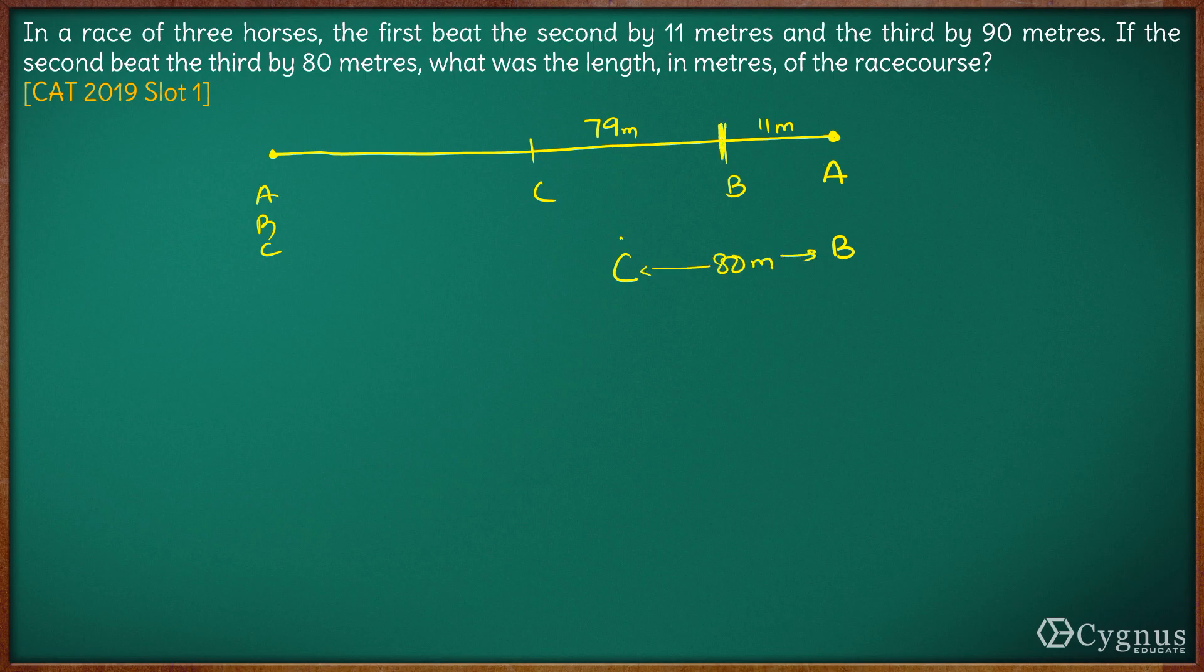When B was at this point, C was 79 meters behind, but by the time B travels another 11 meters, C falls one meter further behind. So by the time B travels 11 meters, the distance between B and C increases by 1 meter.